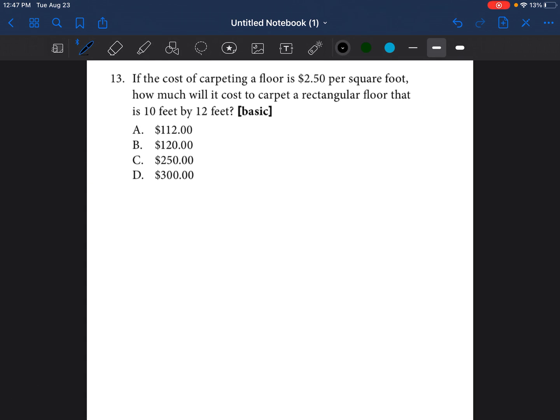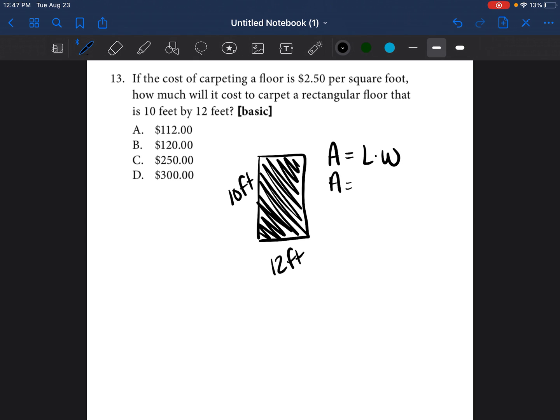Question number 13 says, if the cost of carpeting a floor is $2.50 per square foot, how much will it cost to carpet a rectangular floor that is 10 feet by 12 feet? Anytime they're talking about shapes, I like to draw them. So it's 10 feet by 12 feet. If you're laying a carpet on the floor, it's going to cover the entire carpet. So now I know that I'm dealing with area. Area equals length times width. So area would equal 10 times 12. So area would be 120 feet squared.